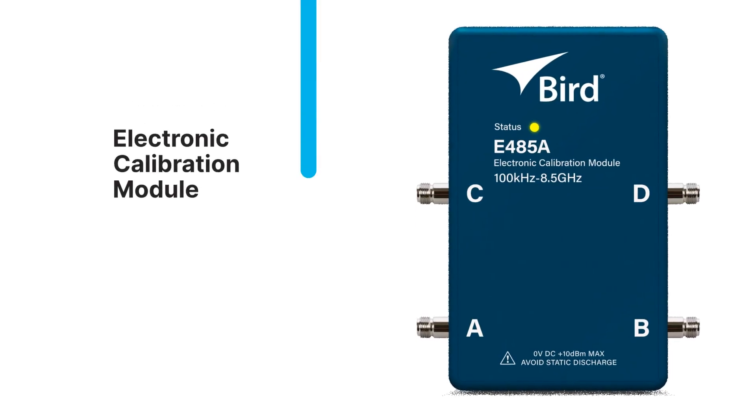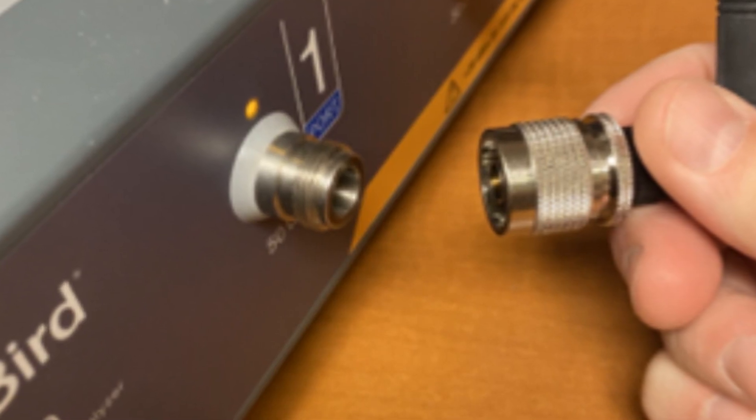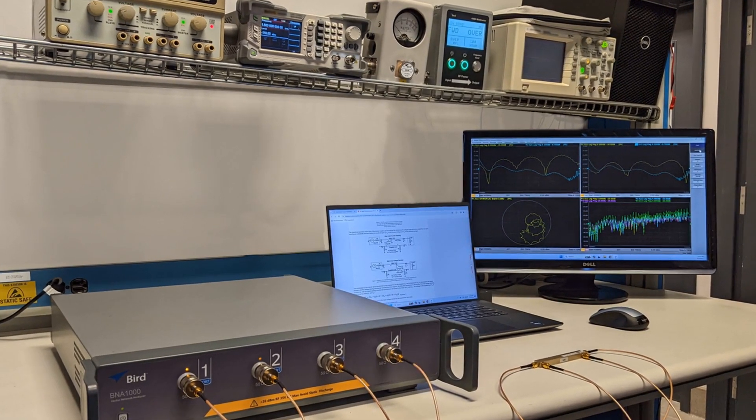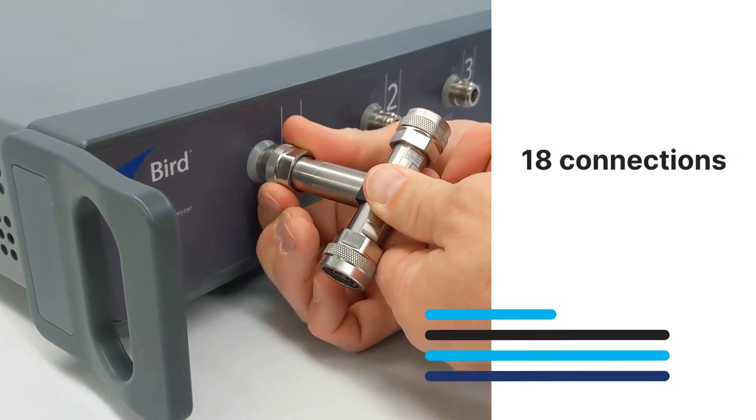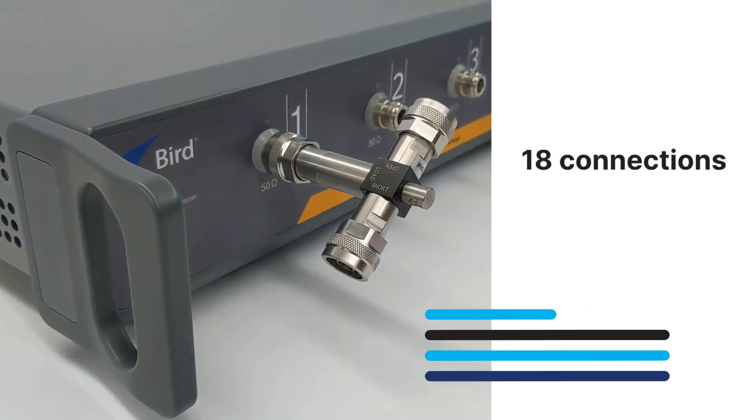The electronic calibration module reduces the calibration steps for users, minimizing wear on connectors and cables, and ensuring a more efficient, error-free process. Compared to 18 connections with traditional methods, just one connection per port is needed to complete a four-port calibration.